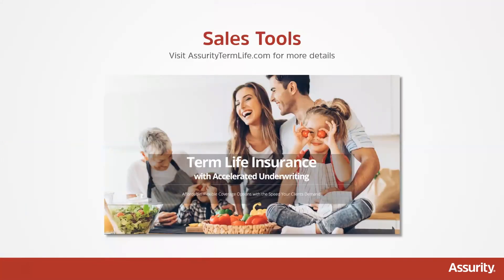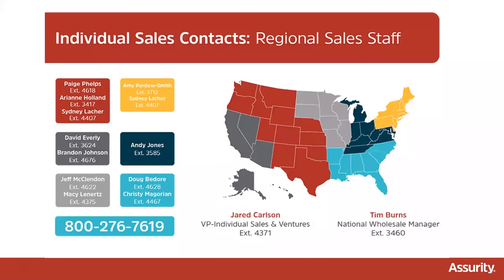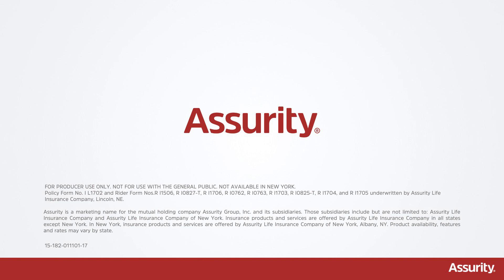One great way to learn more about Assurity's term life insurance with accelerated underwriting is by visiting AssurityTermLife.com. Here you'll find more details on the product and access to resources to learn more and get marketing materials as well. If you have any questions about Assurity's term plans or any life insurance product at Assurity, please contact your regional sales staff. We're always here to help and would love to hear from you.